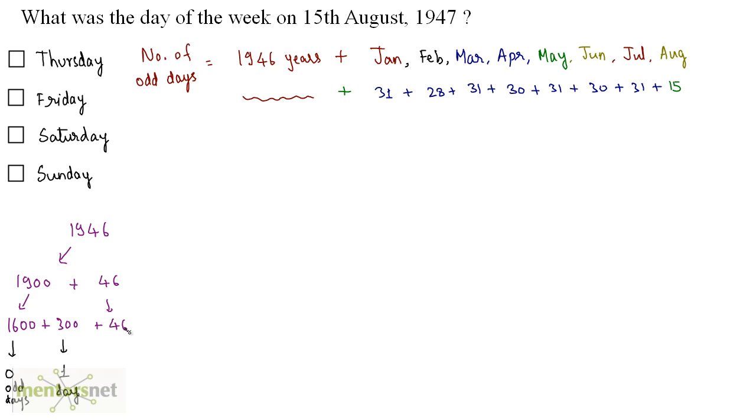Now 46 years actually comprises of 11 leap years and the rest of them are ordinary years. So if we subtract 11 from 46 I get 35 years. Now each leap year has 2 odd days, so 11 leap years will have 22 odd days. And 35 ordinary years will have 35 odd days because each ordinary year has 1 odd day.